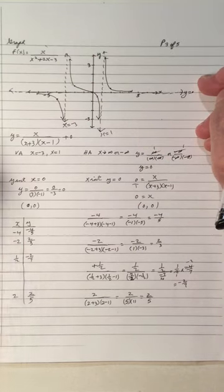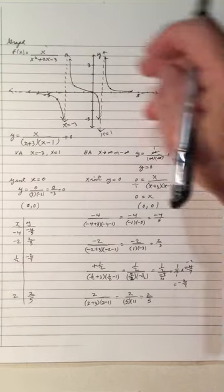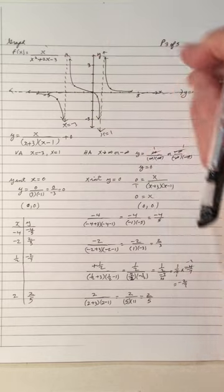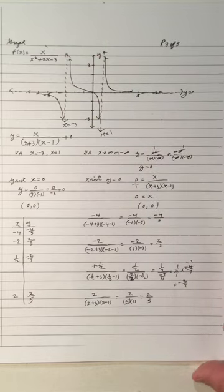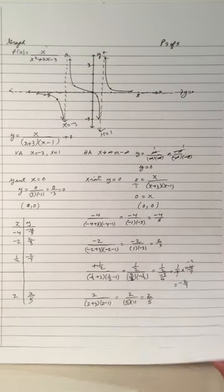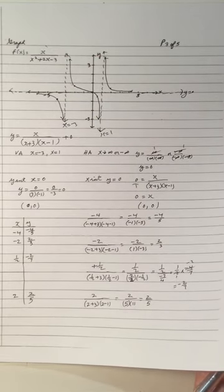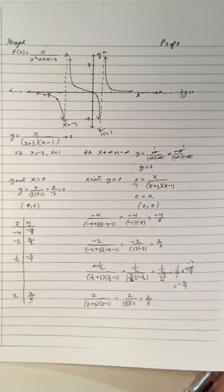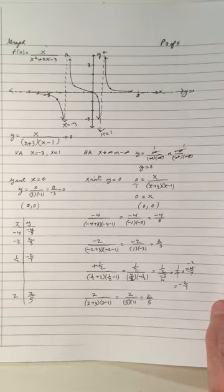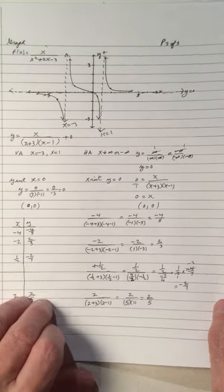Again, by factoring the trinomials and binomials, we make it easier to graph the rational function.